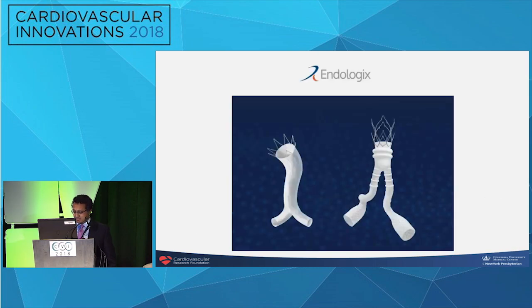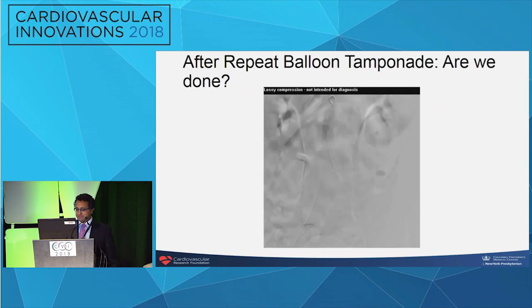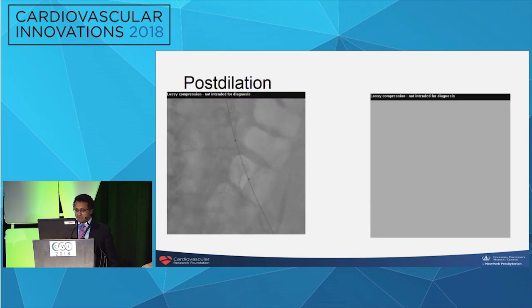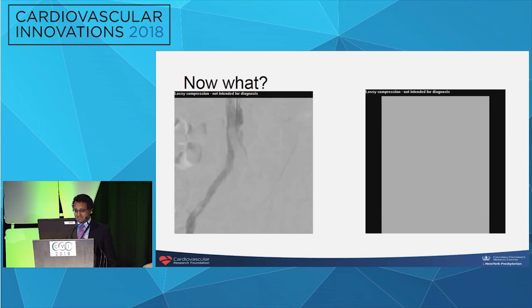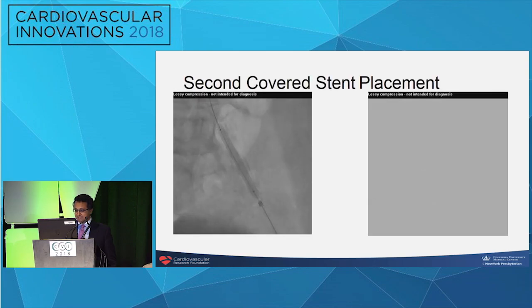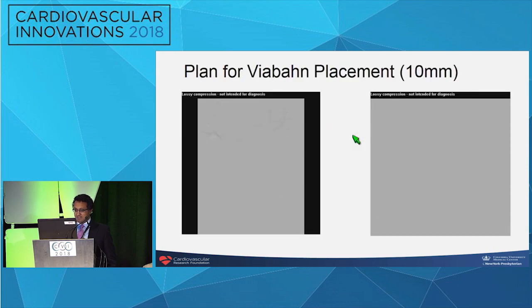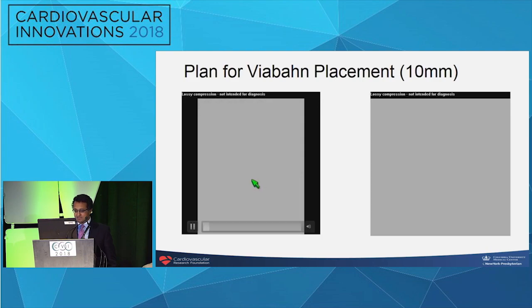We've already heard about the AFX device and other endografts that might be applicable here, but it's unlikely you would choose those in an emergency scenario. In this patient, we still had persistent leak and couldn't really identify where it was. We post-dilated the first stent and caused more trouble, then extended the stent after balloon tamponade with another stent. We still had persistent leak — there is ongoing leakage visible. At that point, we obtained crossover, placed two balloons in a kissing fashion to achieve aortic occlusion, then serially deflated and upsized.